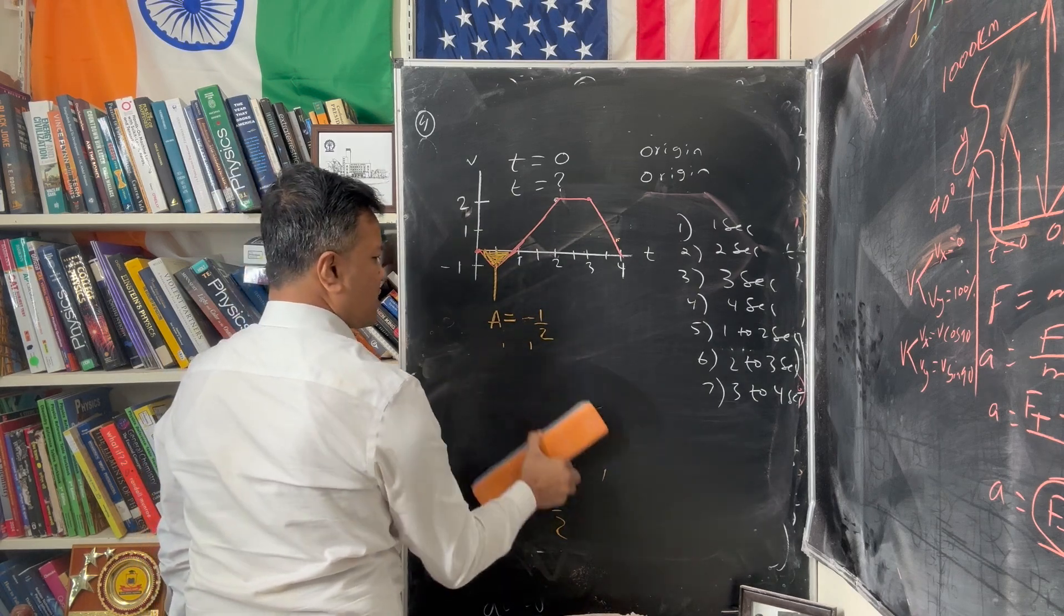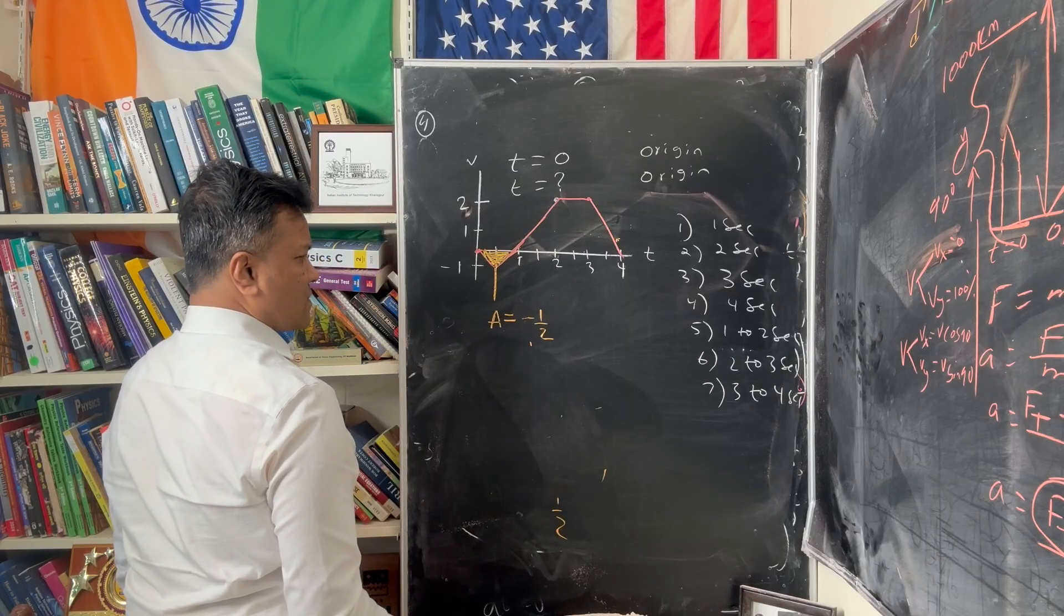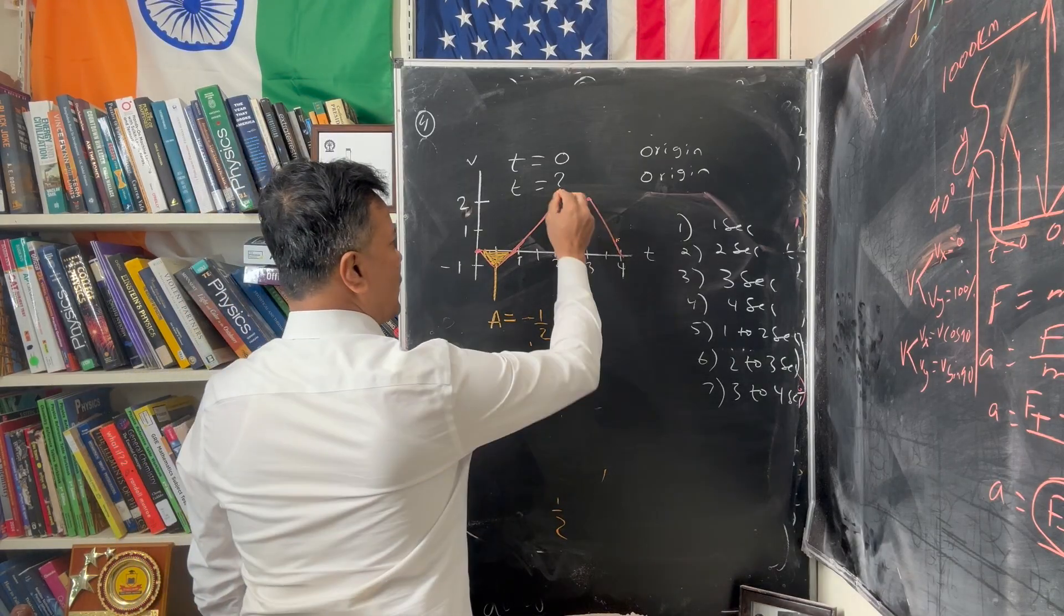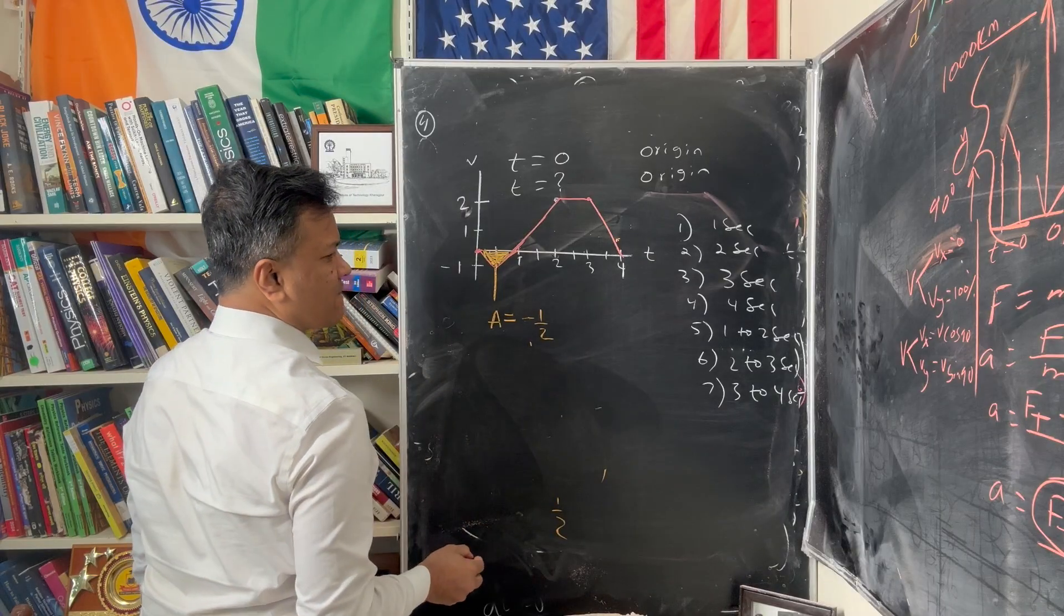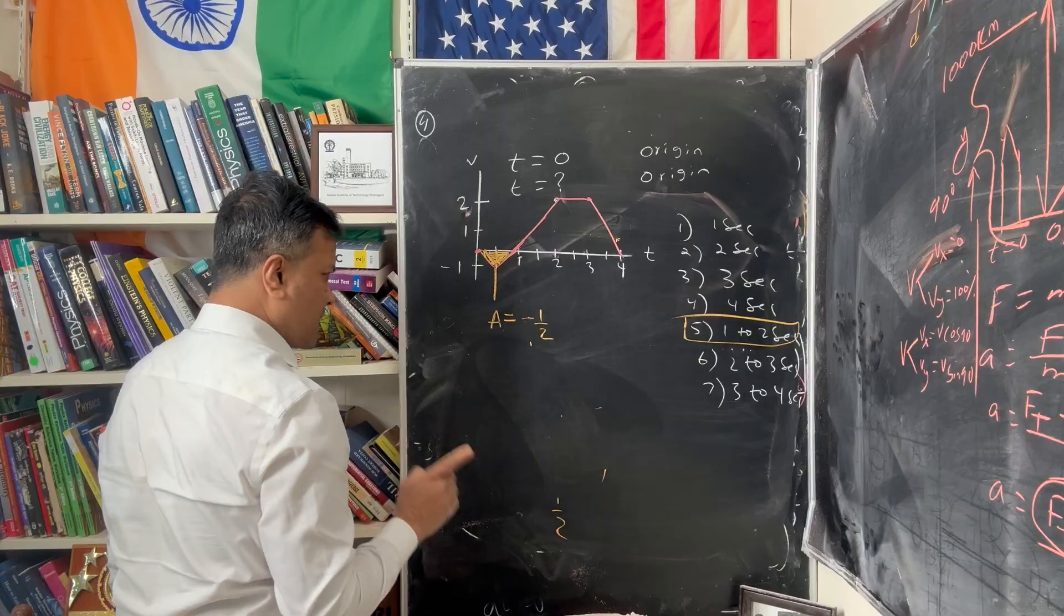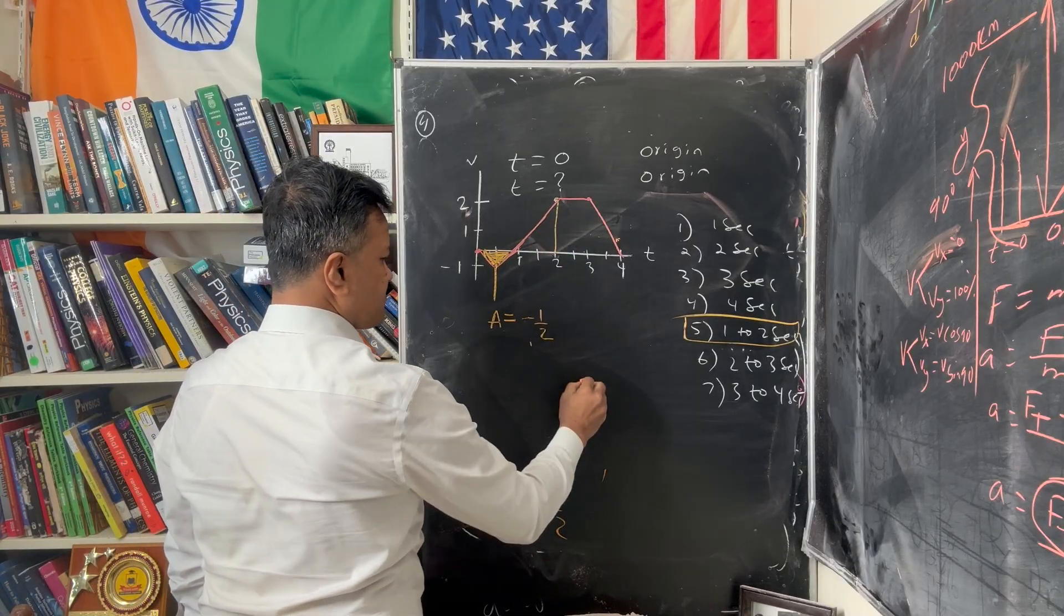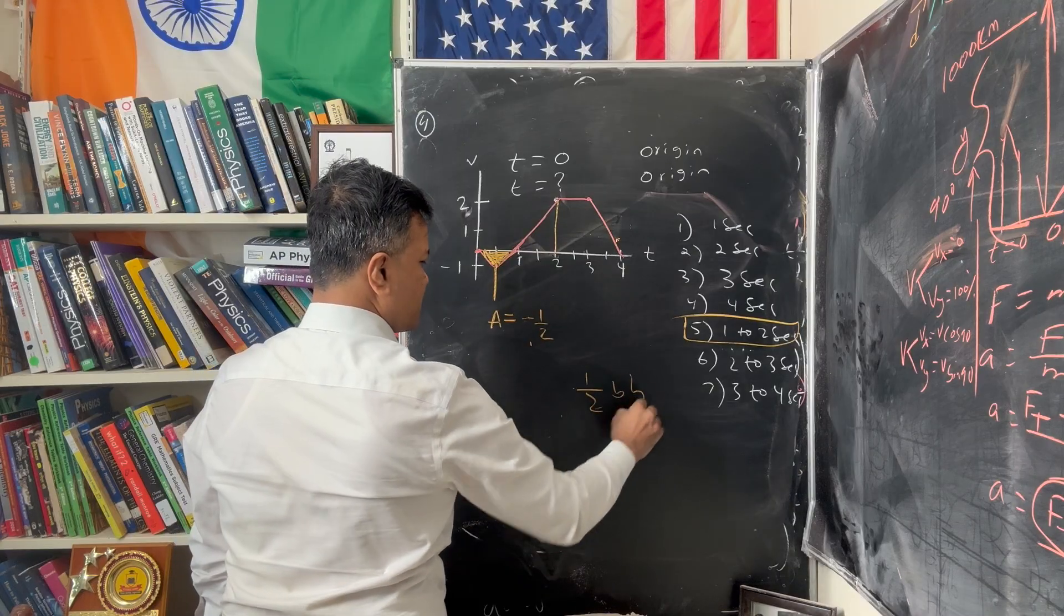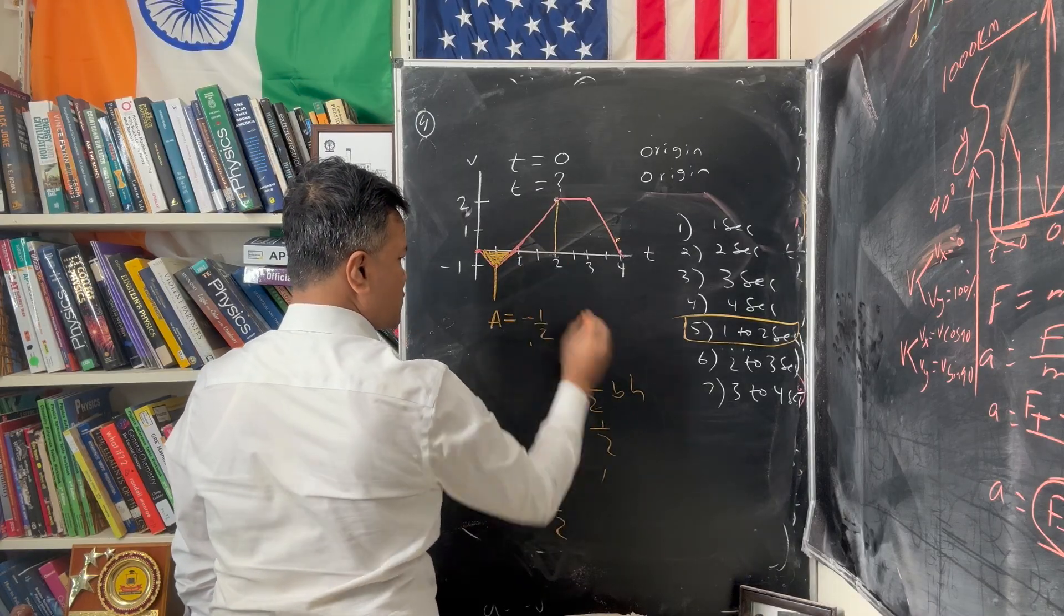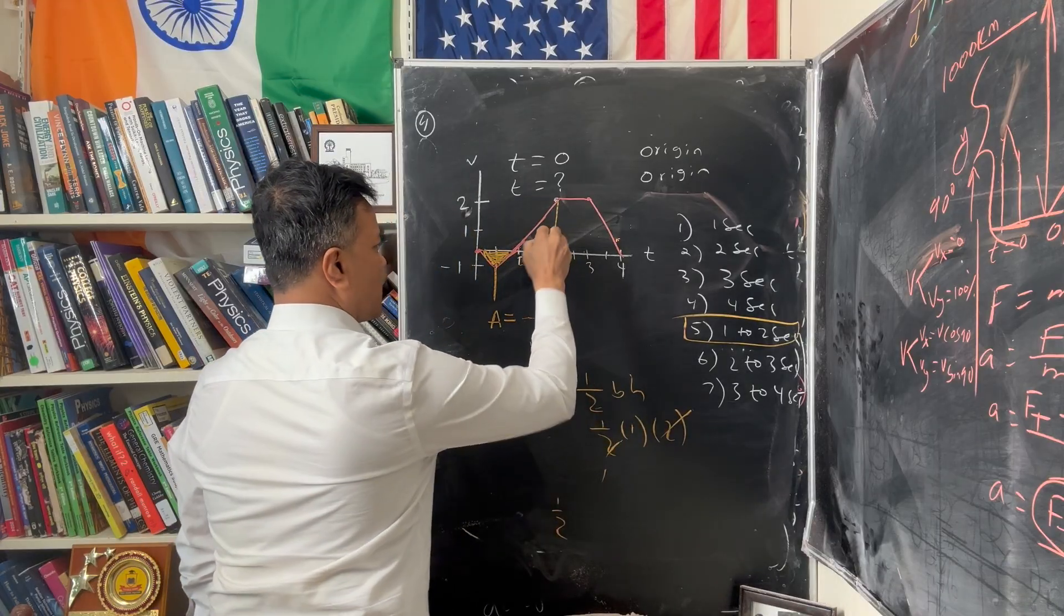So how that's going to help you find the answer is, the object returns to origin between 1 to 2 seconds. From 1 to 2 seconds, area is also half bh. Half bh is 2 minus 1 is 1, h is 2. This area is 1.